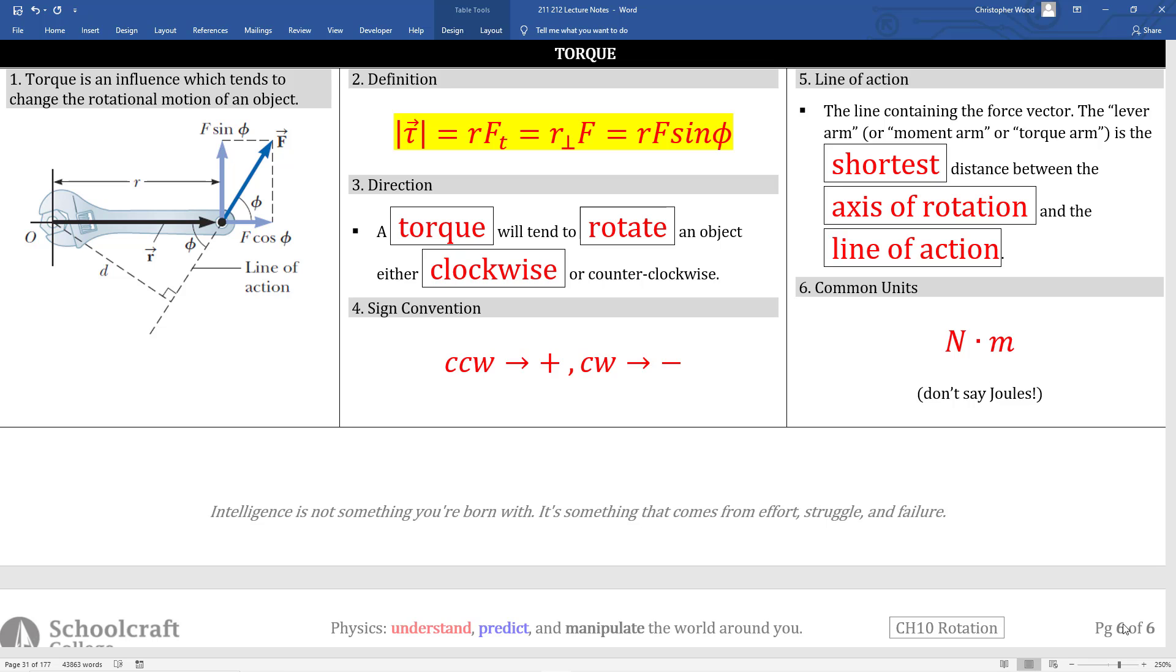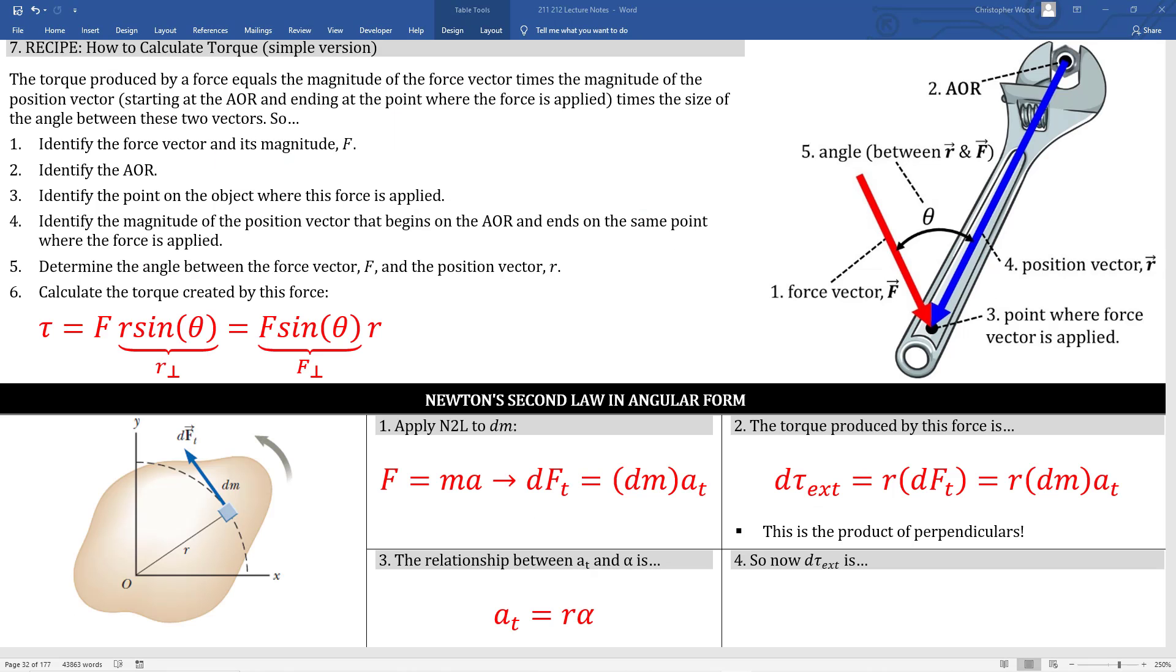Torque is the product of perpendiculars, specifically the product of the applied force and its associated torque arm. Box number 7 provides a simple recipe to calculate torque. Number 1, you identify the force vector and its magnitude F indicated by this red vector shown here. Number 2, identify the axis of rotation, in this case it's perpendicular to the screen and shown here. Number 3, identify the point where the force is applied. Number 4, identify the position vector that starts on the axis of rotation and terminates at the point of the force application. Number 5, determine the angle between this force vector and the position vector. Number 6, calculate torque.